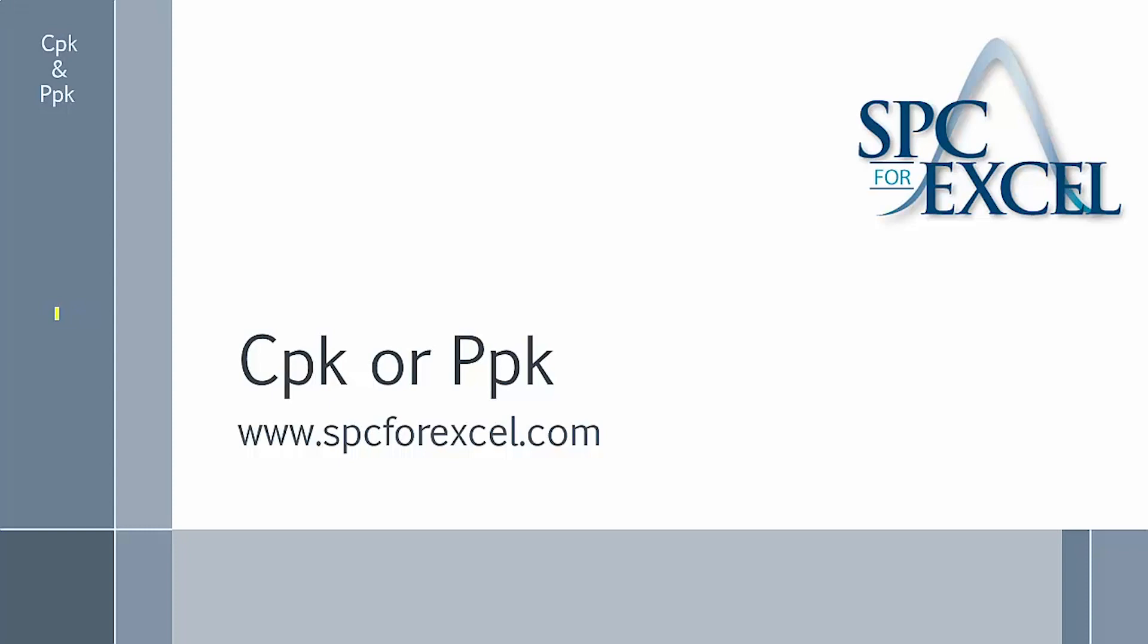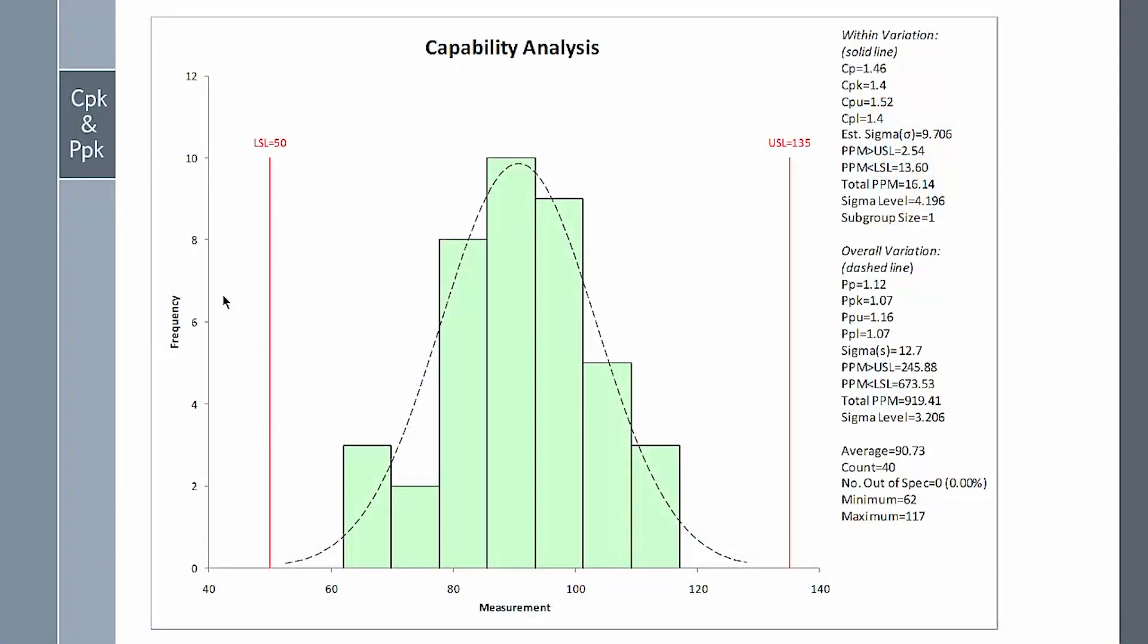This video takes a look at two common process capability indexes, CPK and PPK. A supplier has just sent you a process capability study based on a product he supplies you. The requirement is a CPK value of 1.33. He's provided you 1.4, so you're happy.